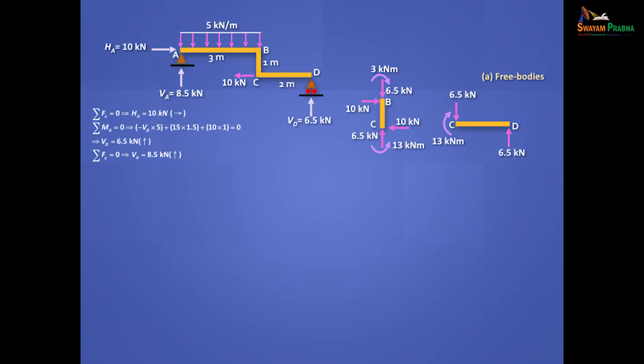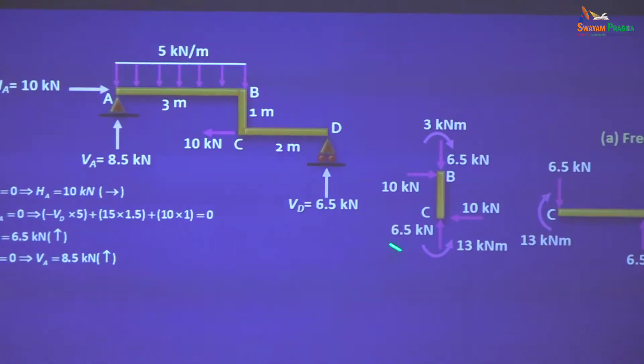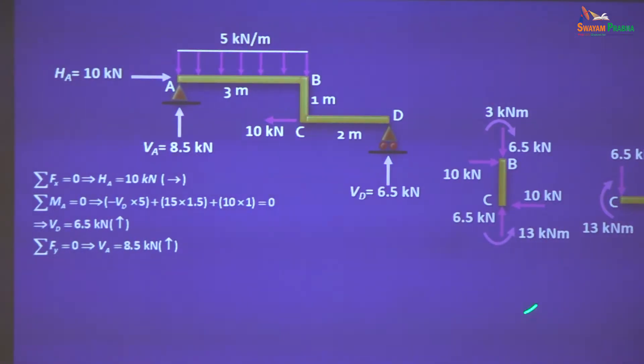So 10 balances with 10 here. 6.5 up, 6.5 down. Then you have a 13 anti-clockwise, and you also have a 10 into 1 clockwise. So you have a balance of 3 which should be clockwise to get sigma M equal to 0. Now you are satisfying equilibrium here fully.